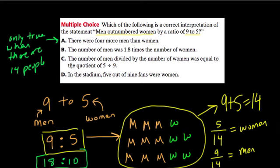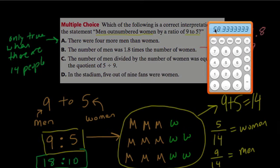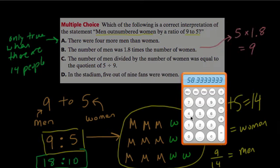We'll come back to it if we find nothing else better. B says the number of men was 1.8 times the number of women. This might be a more accurate statement because 5 times 1.8 - you can work this out - that will end up equaling what? Well, that equals 9. We can check on our calculator here if we're not feeling comfortable with that notion.